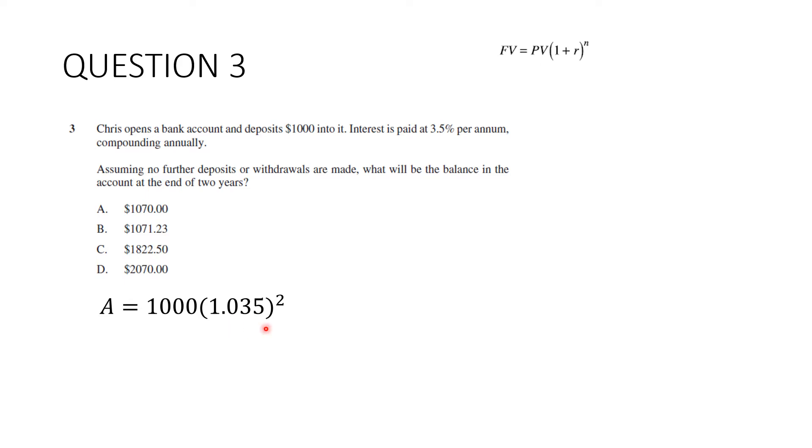So we've just got to substitute into the formula. I've done the quick version. You don't have to. You can do 1 plus 3.5%. And it's at the end of two years. We've just got to put it into the calculator and we get $1,071.23, which is B.